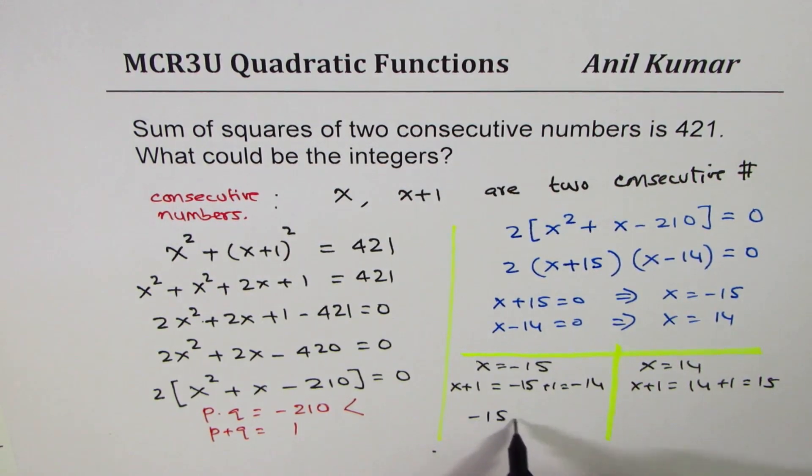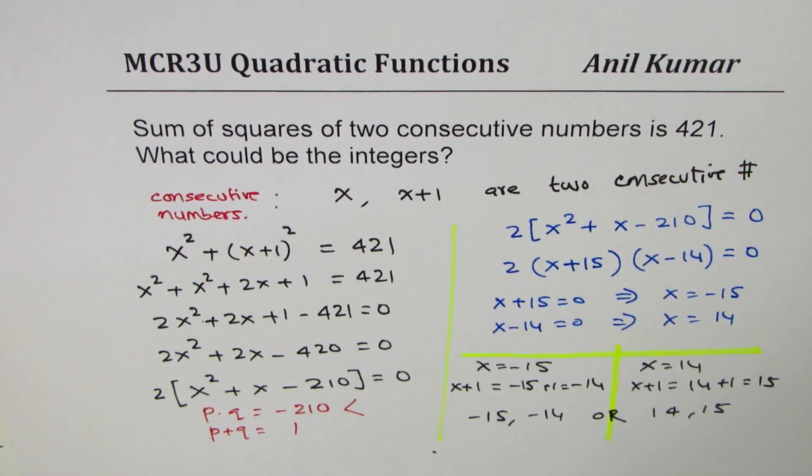If x equals to 14, x plus 1 is 14 plus 1 which is 15. And therefore the numbers are minus 15, minus 14, or you can say 14 and 15. So that is how this question can be solved and these are the only two sets of integers which will satisfy the given condition.